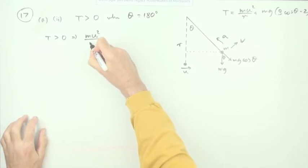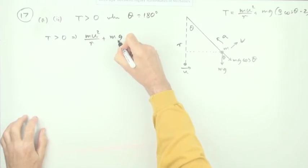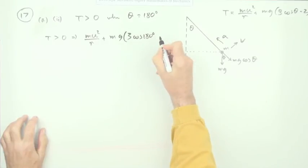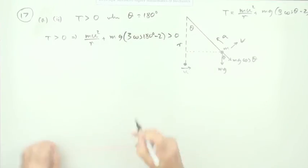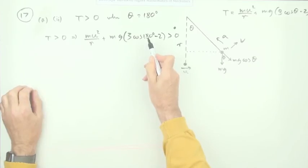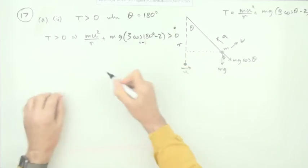T greater than zero means mu squared over r plus mg times 3 cos 180 minus 2 has to be greater than zero. So that's worth a mark. Now it's just a case of working this out. Now the cosine of 180 is negative 1. Just think of the cosine graph. So that comes to negative 5.